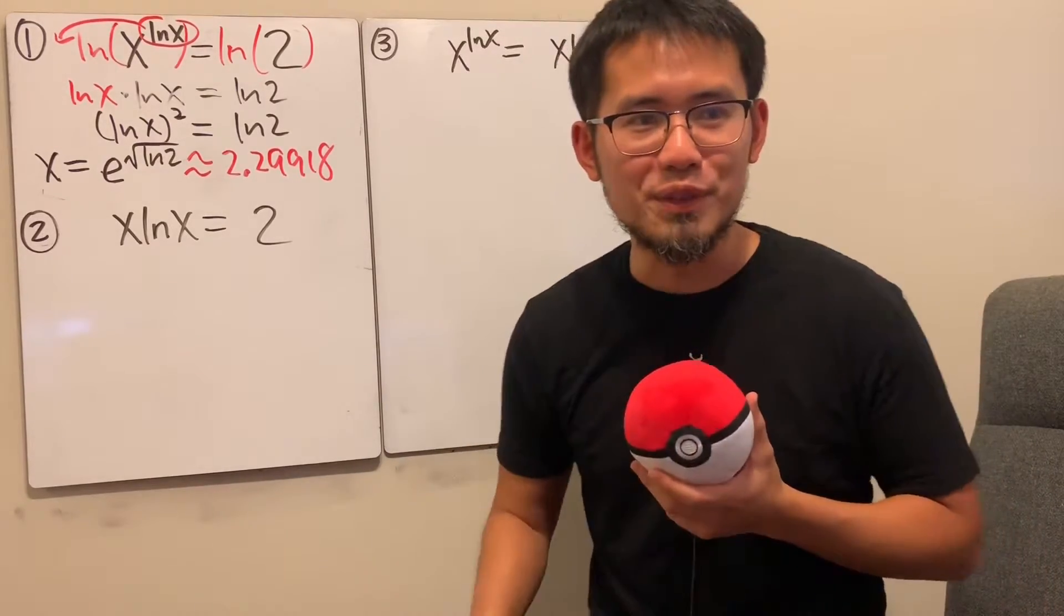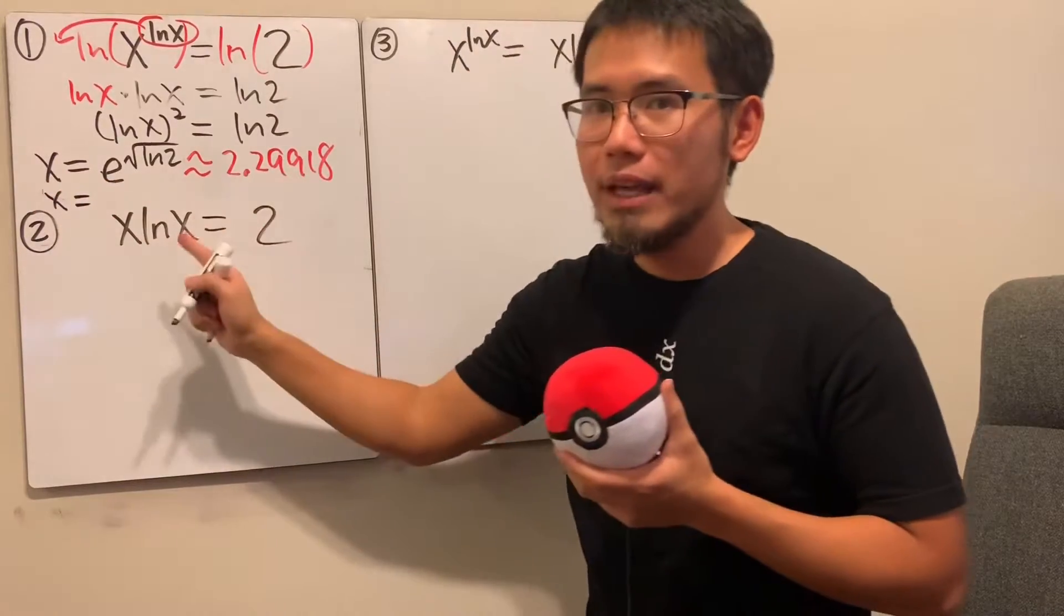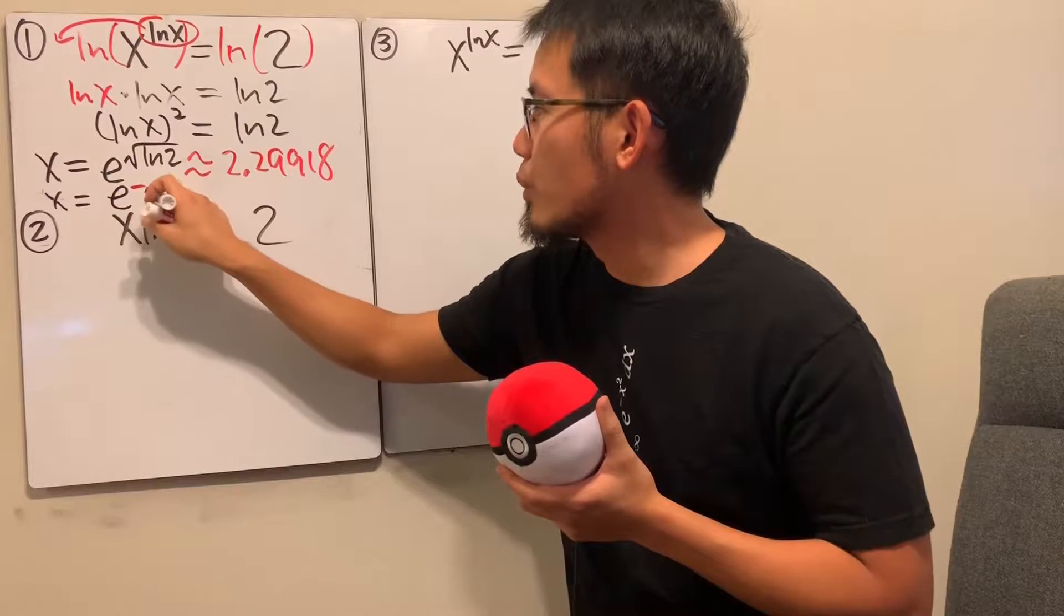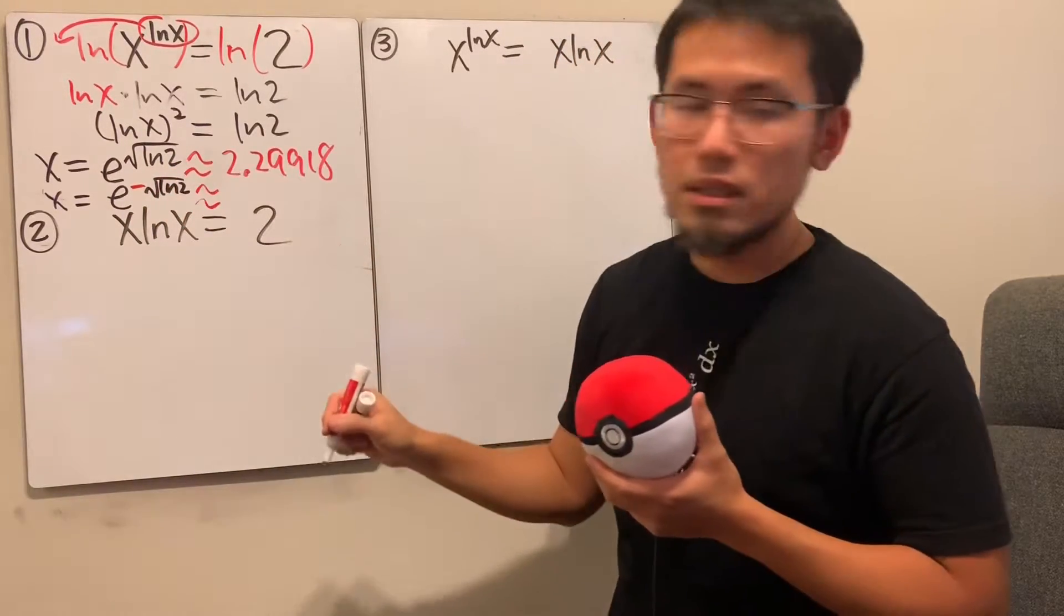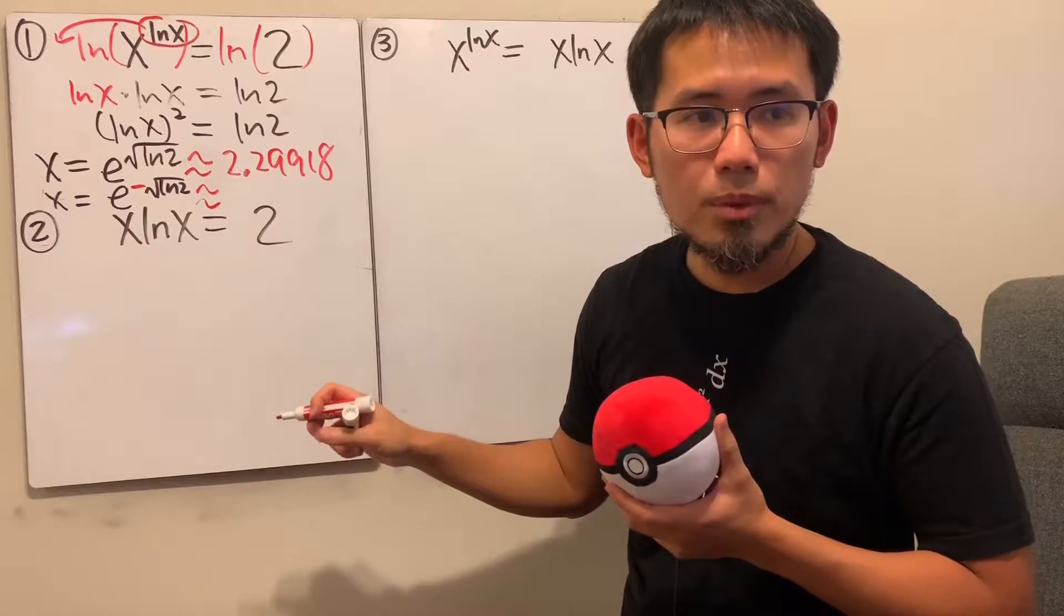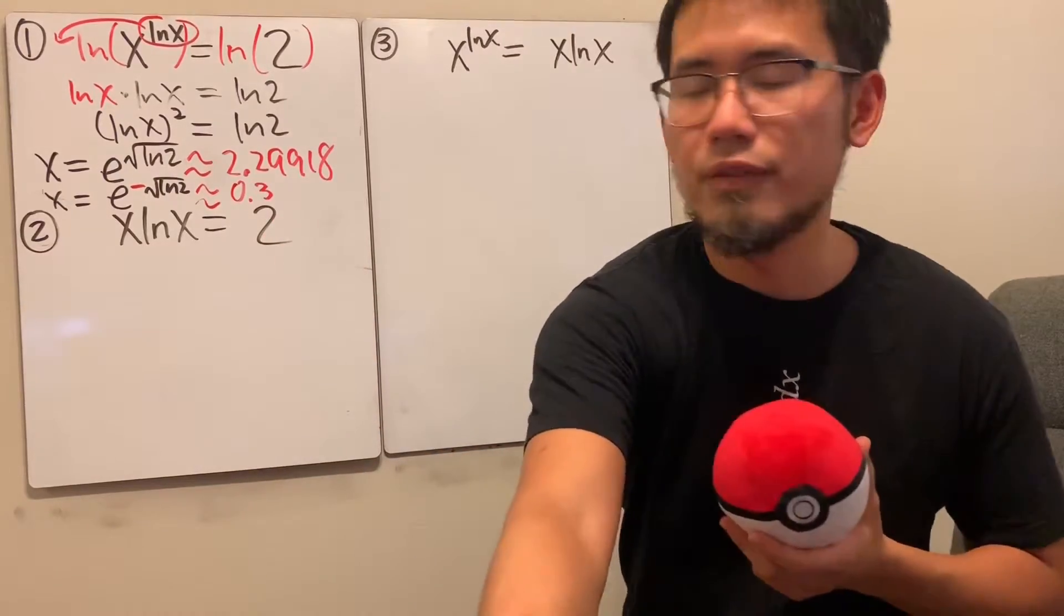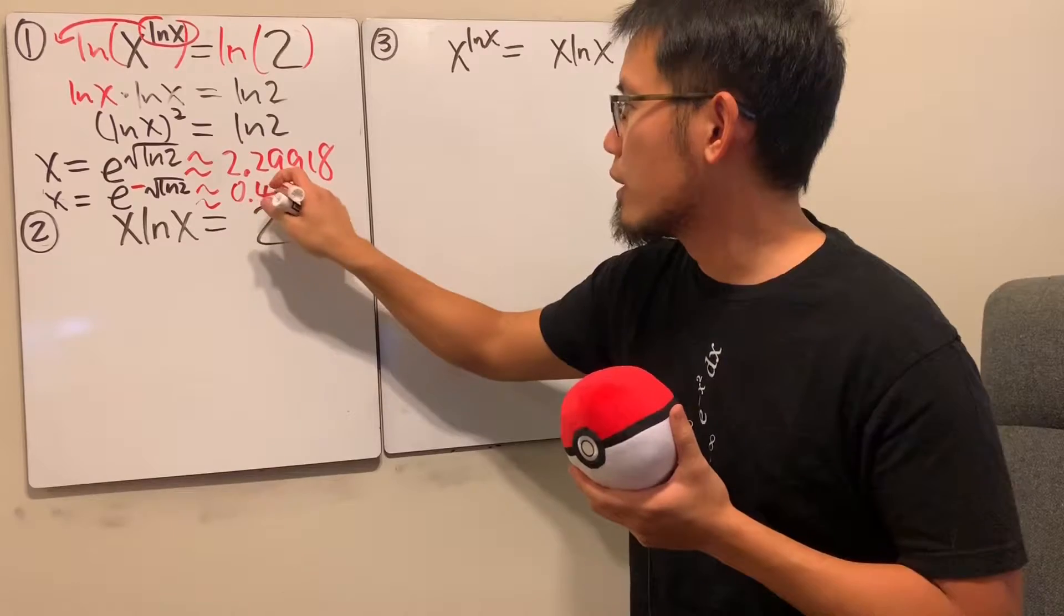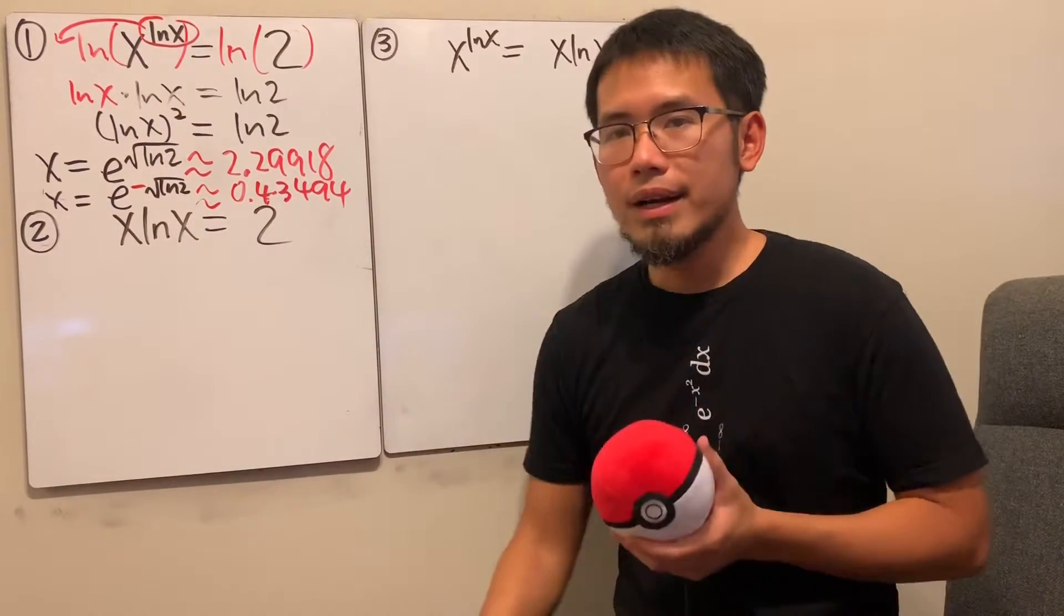Yeah, I'm looking at the answer over there. But anyway, though, if you have the other one, namely, x equals e to the negative square root of natural log of 2. This right here is approximately, let's see, 0.3, sorry, 43494. So 0.43494, like this. All right, not so bad. One thing to notice is that there's not really like a way you can simplify this. We'll just leave it like that, e to the square root of ln 2 power, like that.